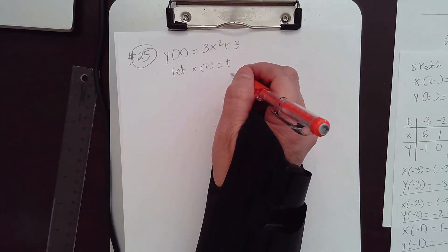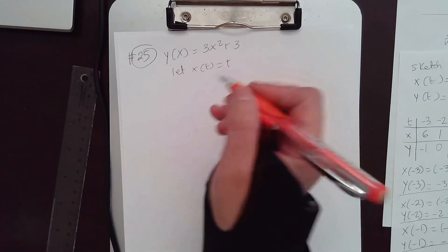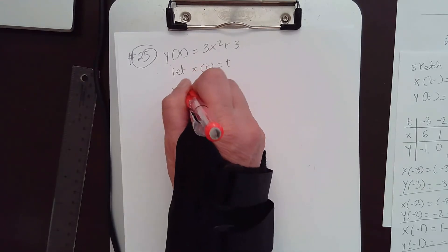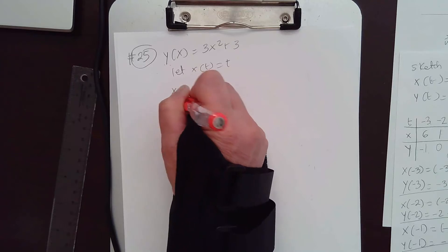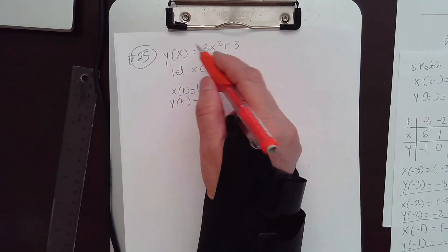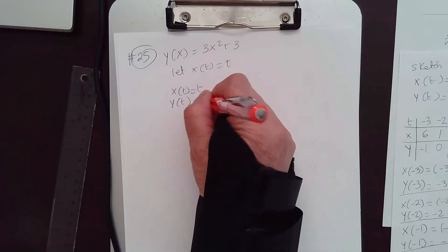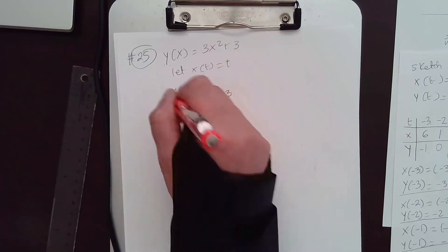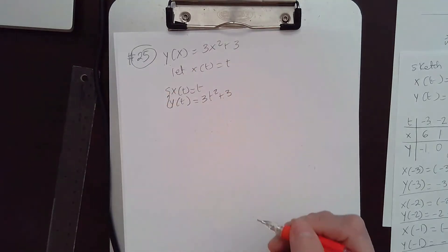So, you can write the parametric equation as x(t) is equal to t, and y(t), again, substitute t for x in here. So, you get 3t squared plus 3. This is number 25.